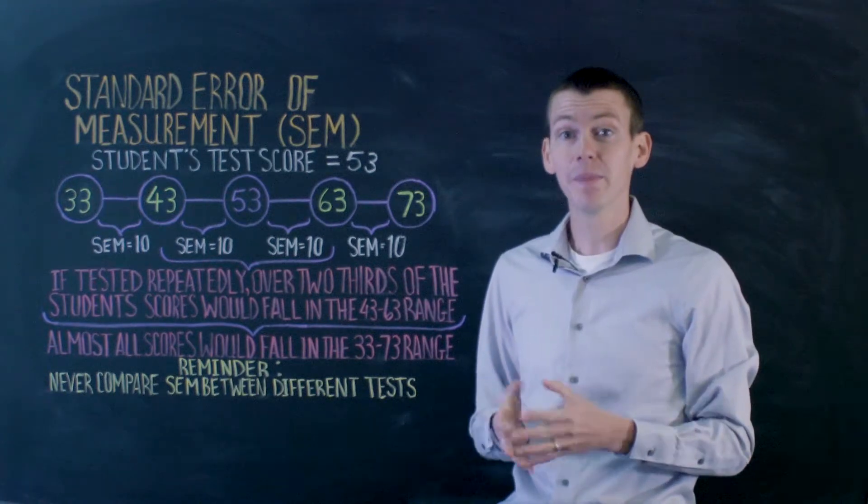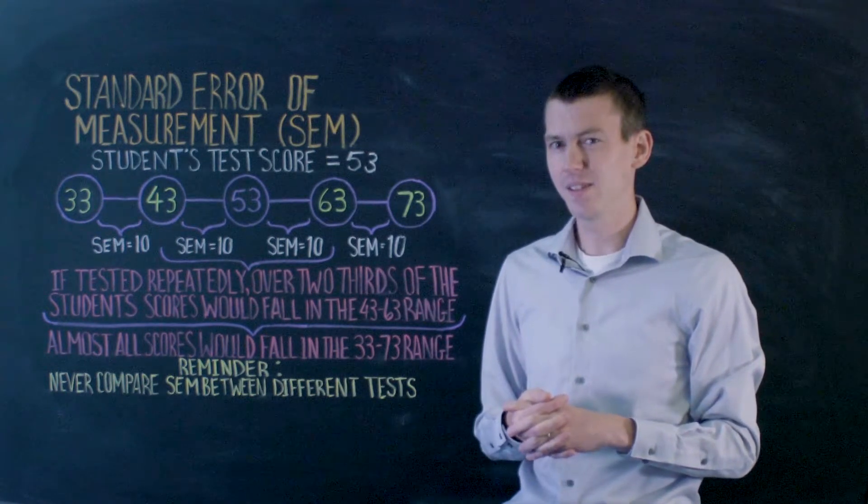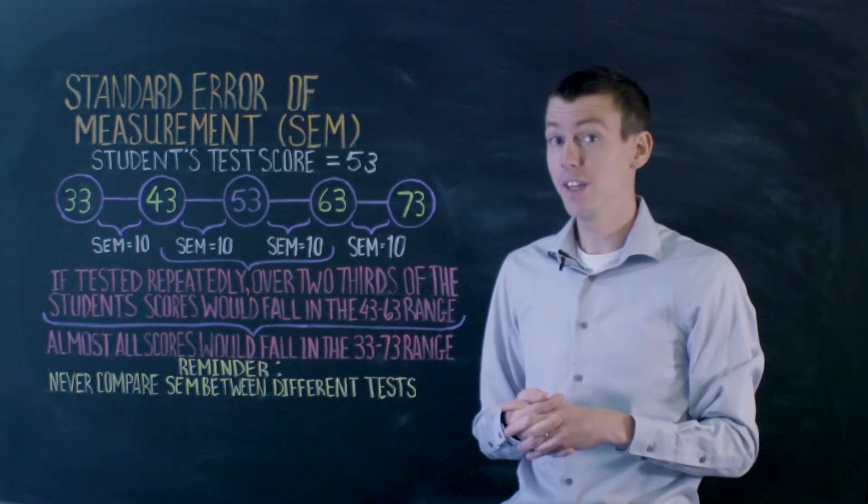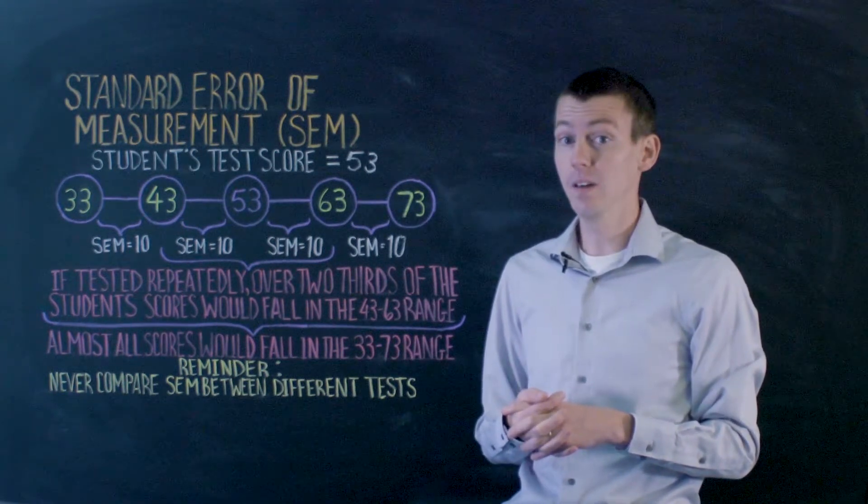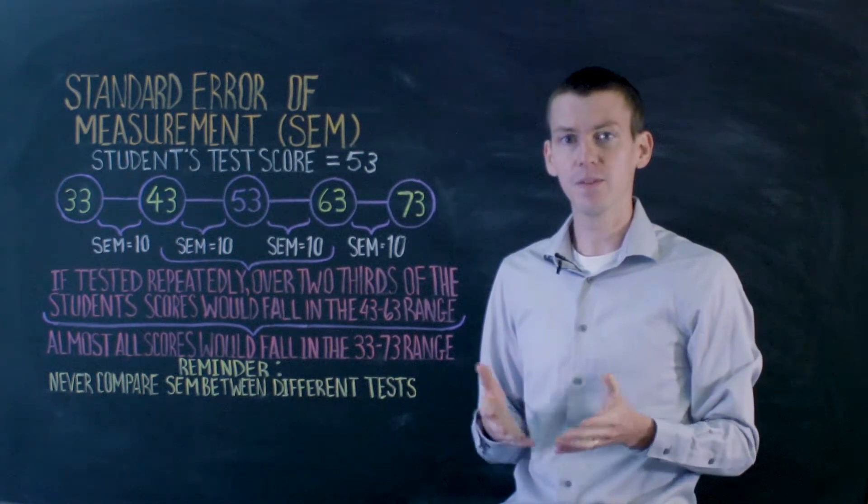So we have the ACT, and that has a score range of 1 to 36. On that test, 10 probably represents a lot of error. If we think about the SAT, it has a bigger range, 400 to 1600. 10 probably represents very little error.